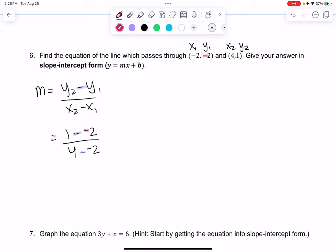So we get 1 plus 2 over 4 plus 2. Simplify that, we get 3 over 6 which simplifies to 1 half. Our slope is 1 half.